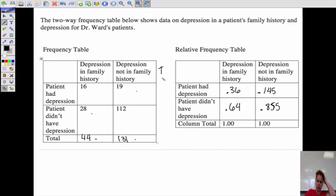Again, if the totals were here, you could do the percentages to find out what percentage of patients had depression. Out of all the patients that had depression, what percent had family history and what percent didn't? Out of the patients that didn't have depression, what percent had family history and what percent didn't?